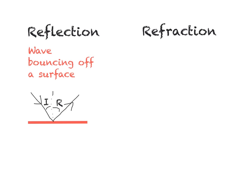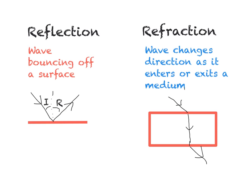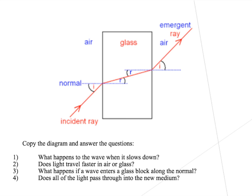In refraction we will be looking at a wave changing direction as it enters or exits a medium. This change in direction is caused by a change in speed as the wave moves from one medium to another, and it is refraction that we are more interested in for P3. Here is a simple diagram of refraction. We can see that the wave is travelling from air to glass and then back into air — two refraction events.